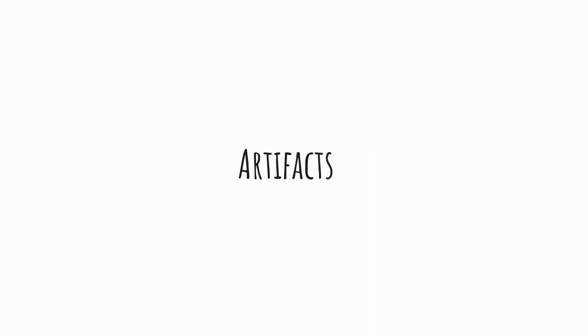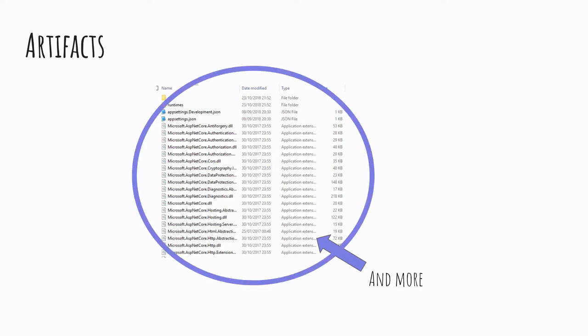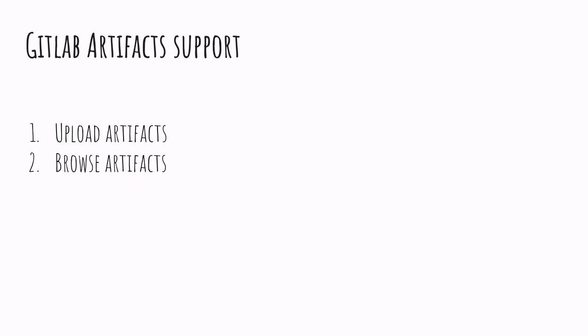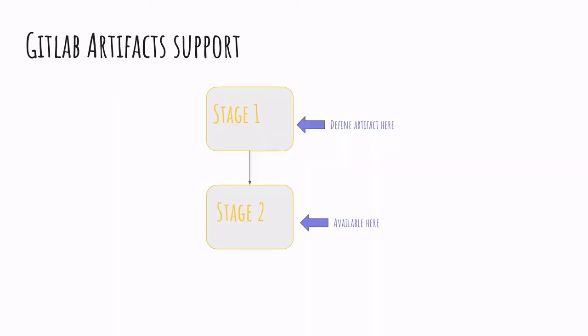Moving on to the second feature: artifacts. Our publish stage generates libraries and files which are then used to deploy and run the application. Those files altogether form what is called an artifact. GitLab offers support to upload and browse artifacts by using the artifact property on the job. We define an artifact by providing paths pointing to the folders and files, and GitLab will then make it available from stage to stage.